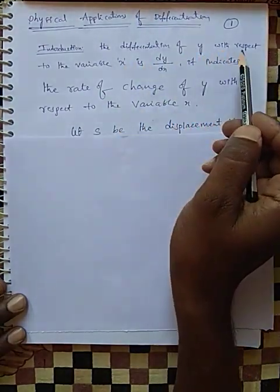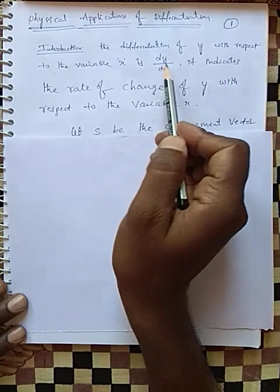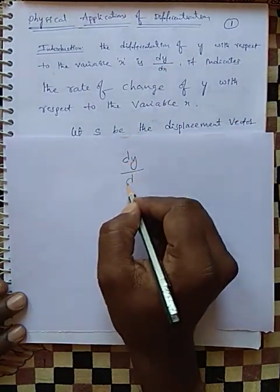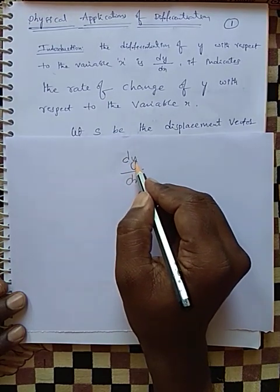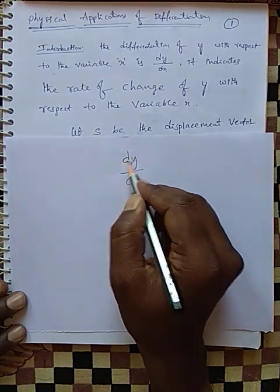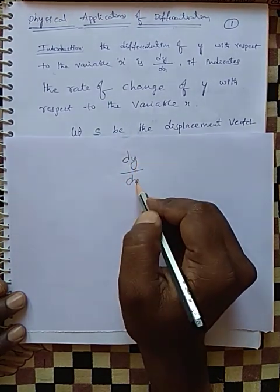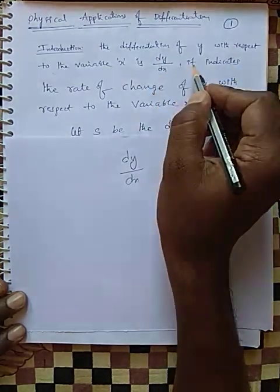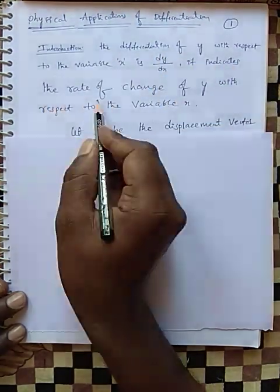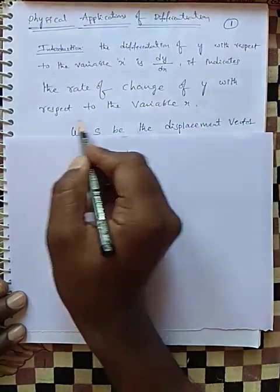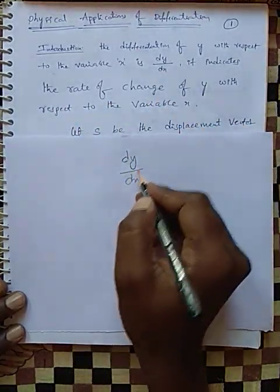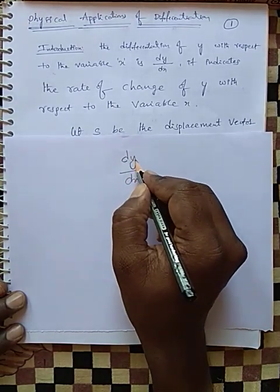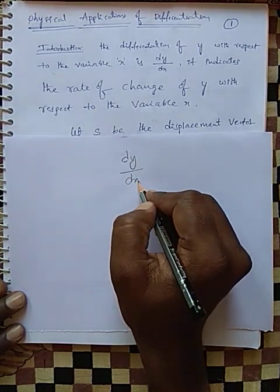The differentiation of y with respect to the variable x is dy by dx. dy by dx means differentiation of y with respect to x. It indicates the rate of change of y with respect to the variable x — the rate of change in variable y with respect to the variable x.